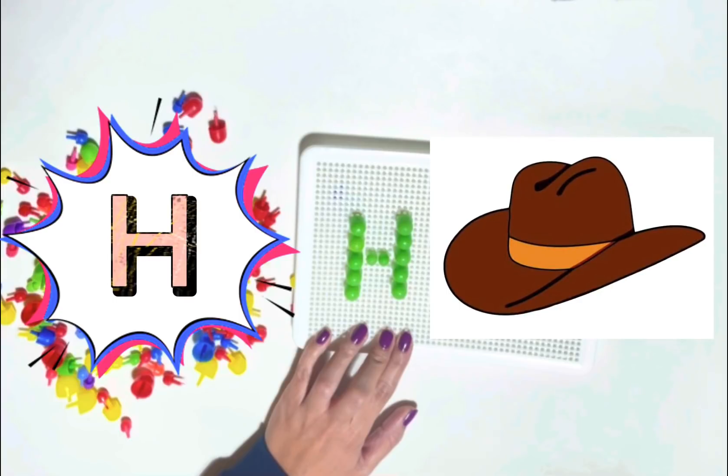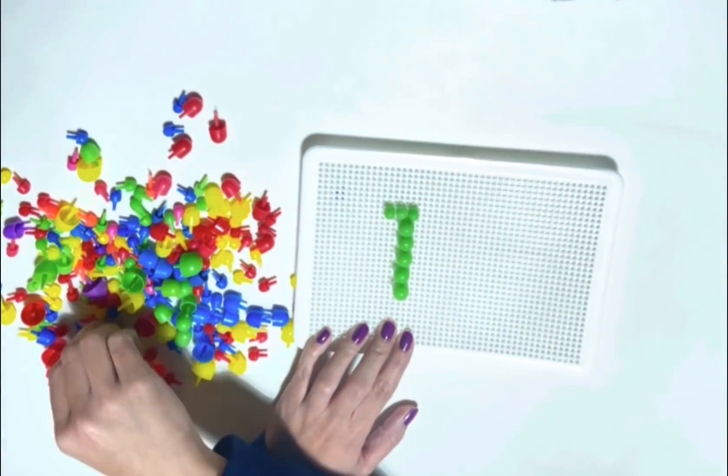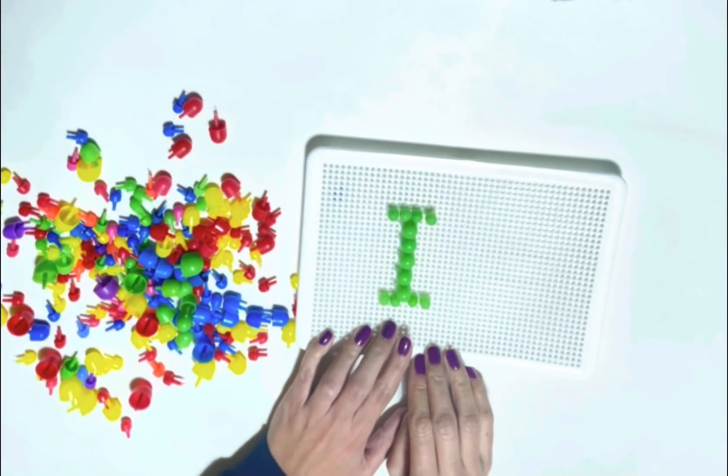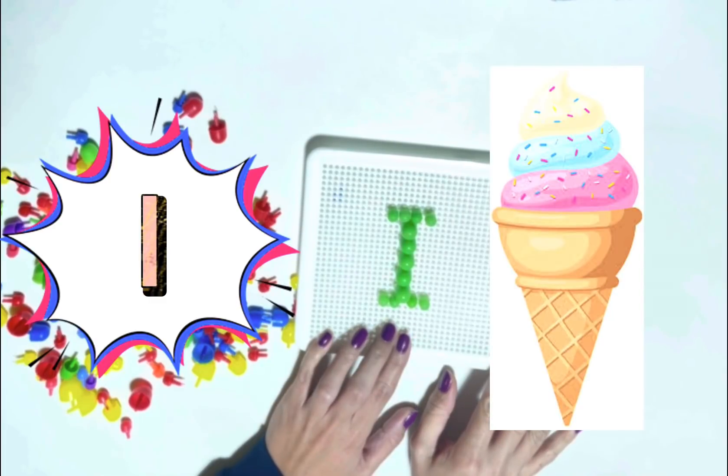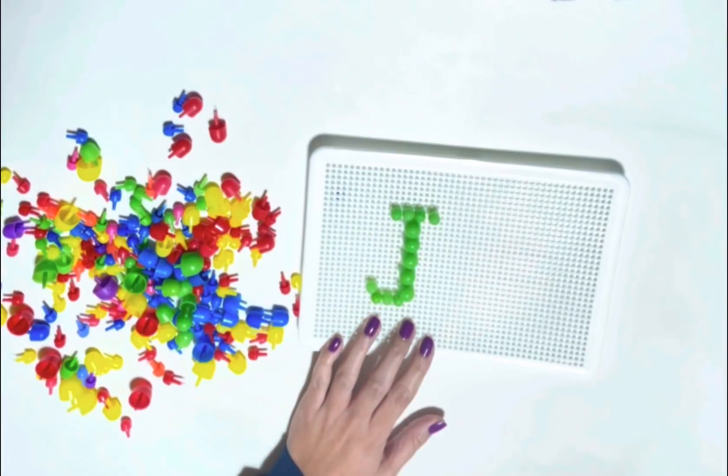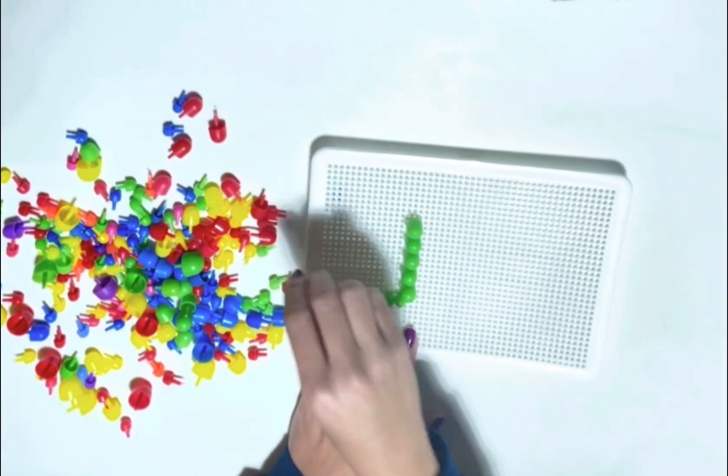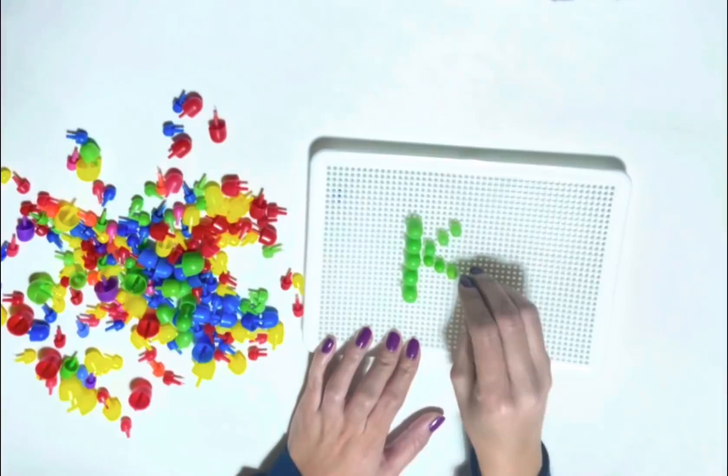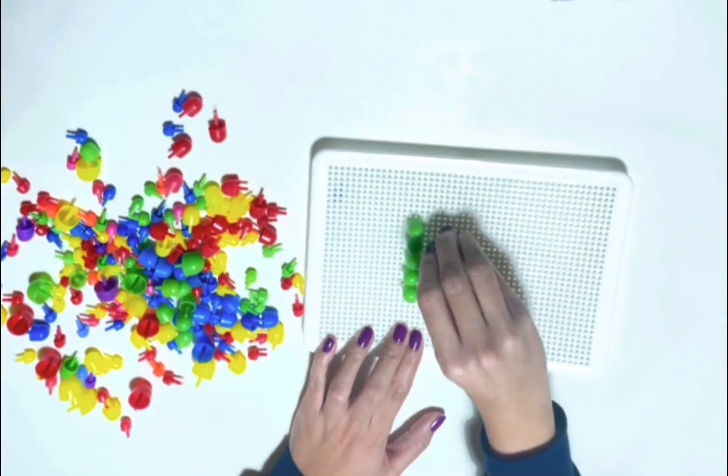H is for Hat. I is for Ice Cream. J is for Jelly. K is for Key.